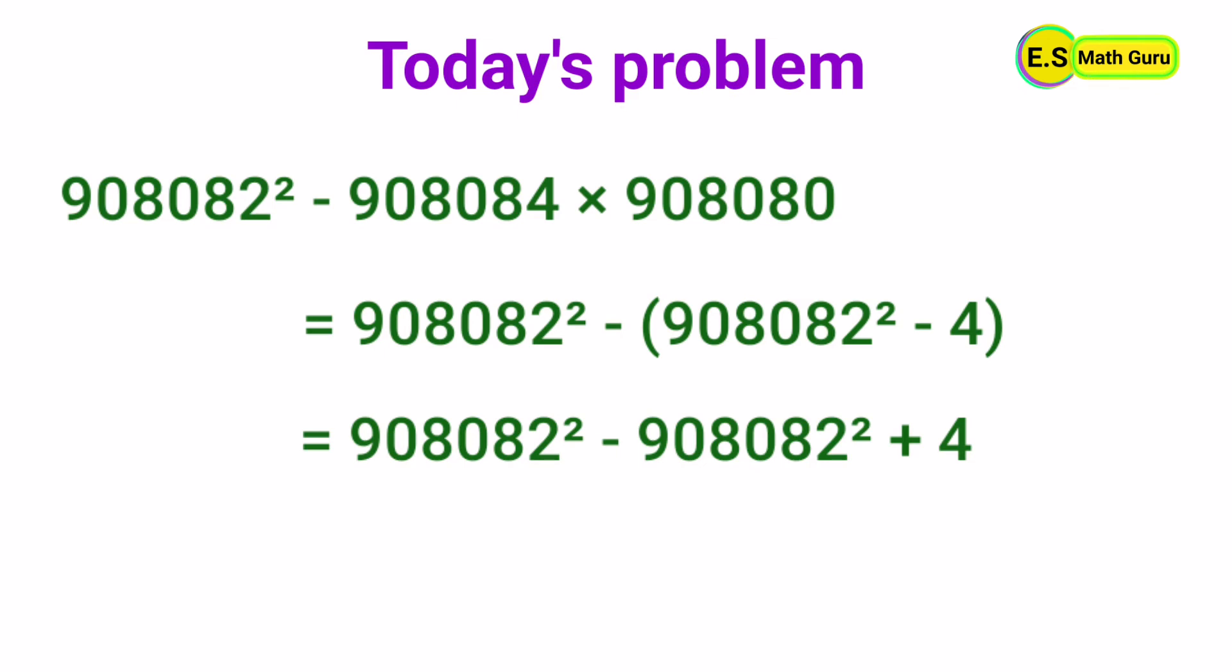Now let us cancel plus 908,082 squared with minus 908,082 squared. Then it remains plus 4. Therefore, the value of the given problem is 4.